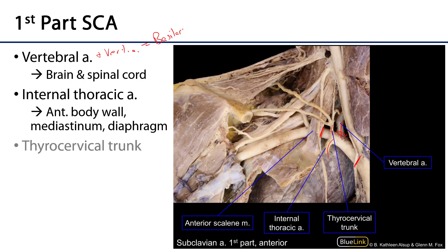The internal thoracic artery weaves down through the innermost intercostal muscles alongside the sternum as it descends the thorax. It sends branches to serve the anterior body wall — the intercostal spaces — as well as aspects of the mediastinum, down to the diaphragm, and some portions of the anterolateral abdominal wall as well.